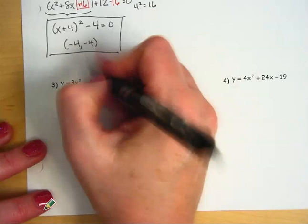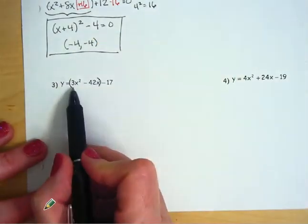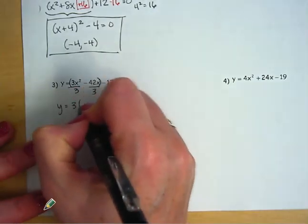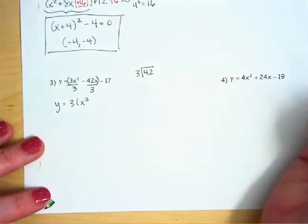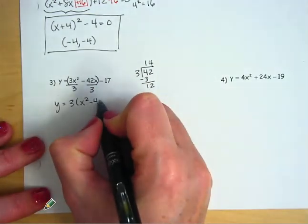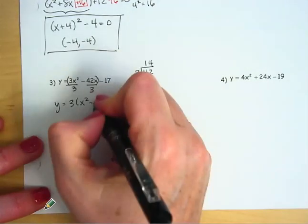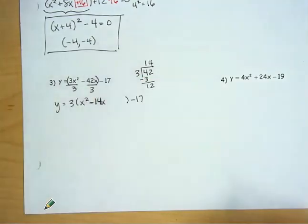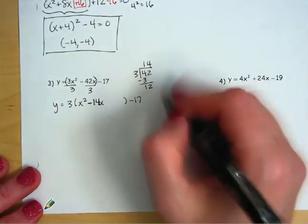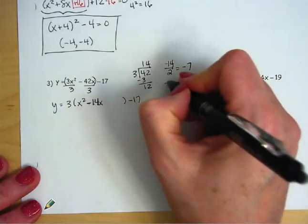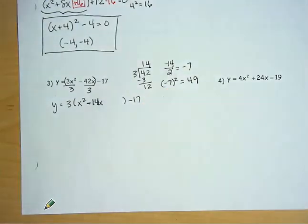Okay I'm going to work through 3 for you and then have you pause the video and try number 4. So we start out by grouping our x terms together. Factoring out the a value which is 3. If you need a quick division tutorial 42 divided by 3: 3 goes into 4 one time and into 12 four times. So this is minus 14x. I'm going to leave some space for what I'm about to add there and then I have the minus 17 on the end.